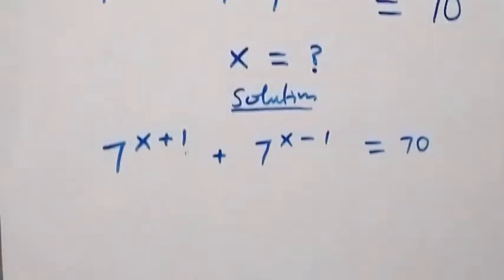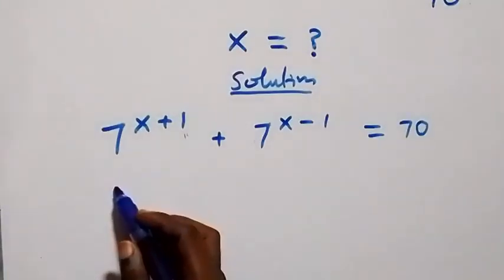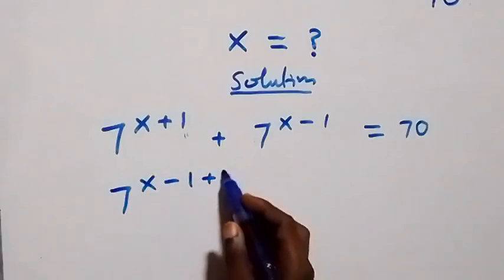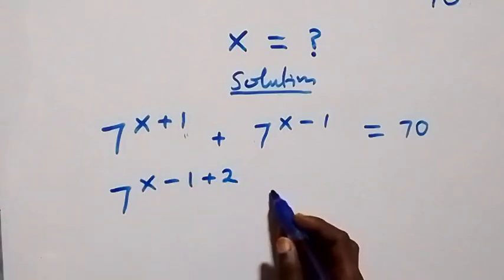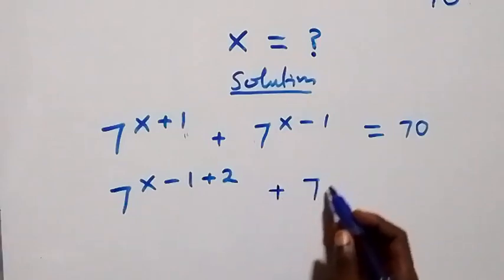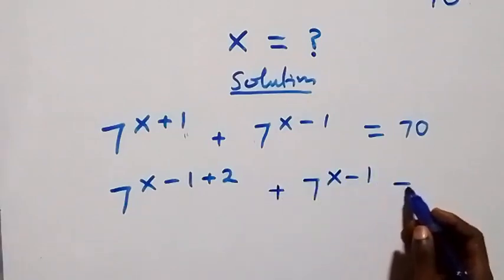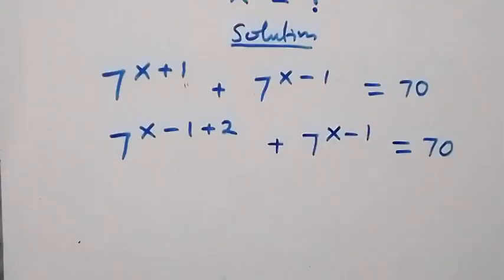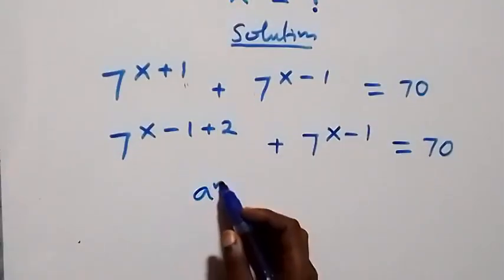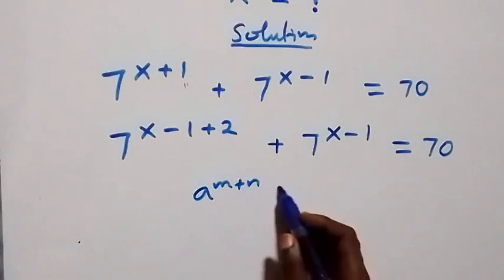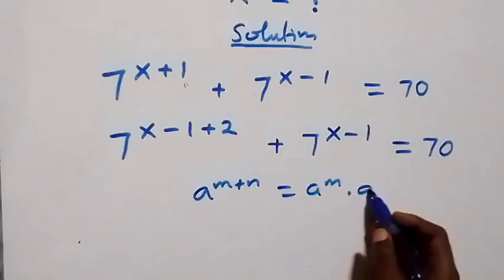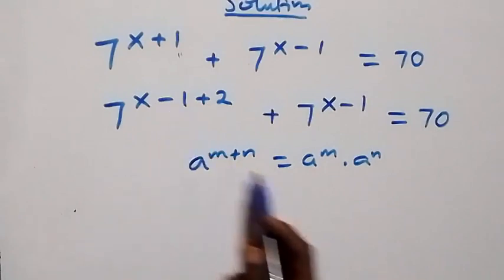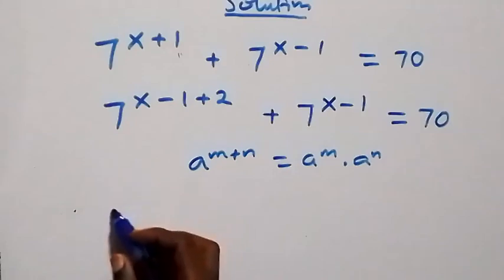From here we can write this as seven raised to power x minus one plus two — that will still be x plus one — then plus seven raised to power x minus one, equals to 70. From the law of indices, a raised to power m plus n is the same as a raised to power m times a raised to power n. Taking x minus one as m and two as n, we can write this as follows.